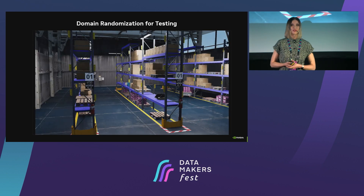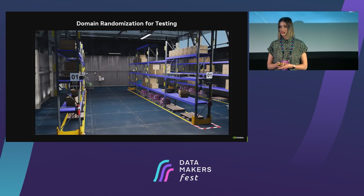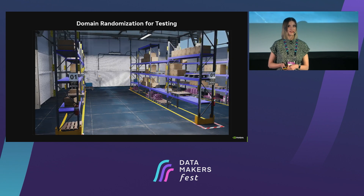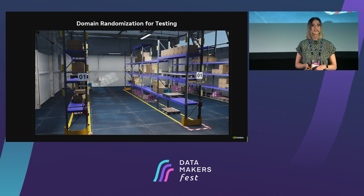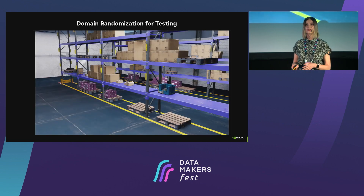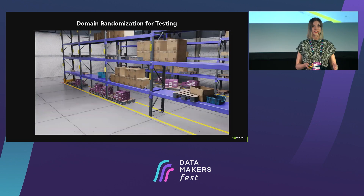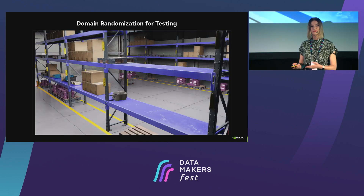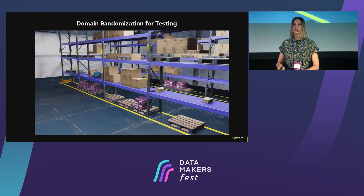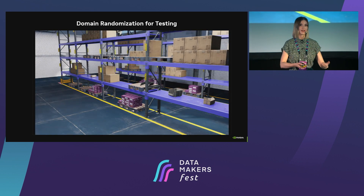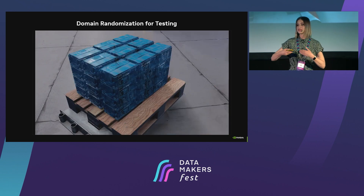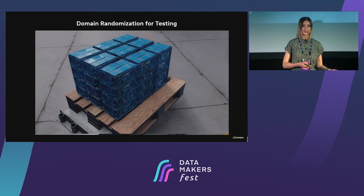Another very useful application of domain randomization — as I mentioned in the beginning, AI robots need lots of testing. You can actually use synthetic data and domain randomization to test your robots and see how they behave in different environments and setups by synthetically generating the scenes.